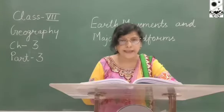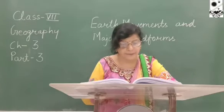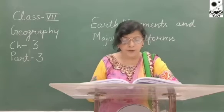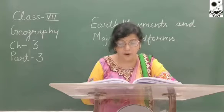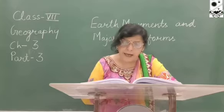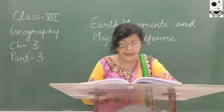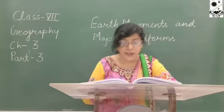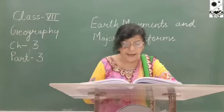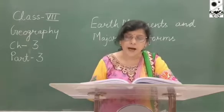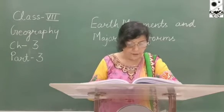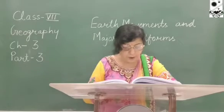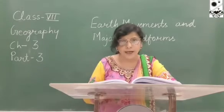When a river erodes vertically through hard rocks, the valley formed is very deep and narrow — such a valley is called a Gorge, and since it is shaped like the letter I, it is also called an I-shaped valley. A wider, steep-walled and usually flat-bottomed valley is called a Canyon.